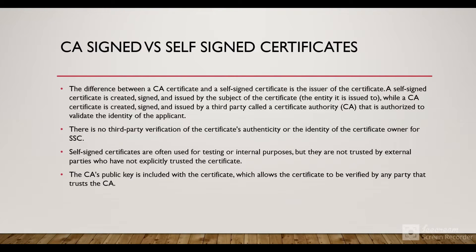Let's discuss what is a CA-signed and self-signed certificate. The main difference between a CA-signed and a self-signed certificate is the issuer of the certificate. A self-signed certificate is created, signed, and issued by the subject of the certificate itself, while a CA-signed certificate is created, signed, and issued by a third-party provider called a certificate authority. For a self-signed certificate, there is no third-party verification of the certificate and no certificate authenticity or identity of the certificate owner. Self-signed certificates are often used for testing or internal purposes, but they are not trusted by external parties.